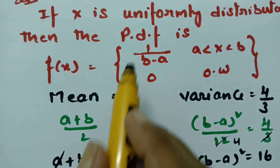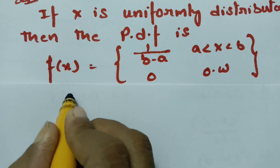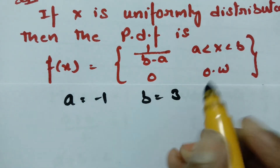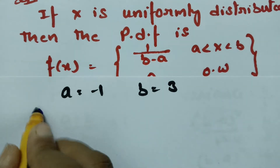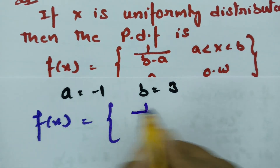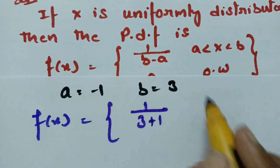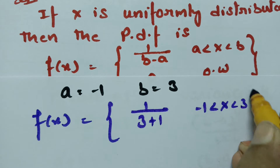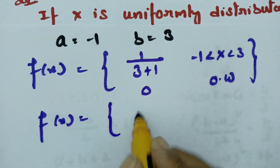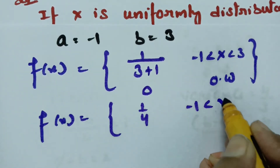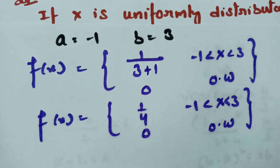Now the probability density function: since a = -1 and b = 3, f(x) = 1 / (b - a) = 1 / 4, when x lies between -1 and 3, and 0 otherwise.